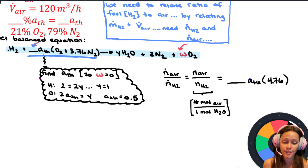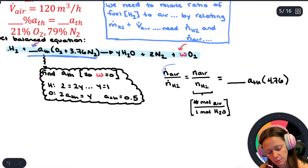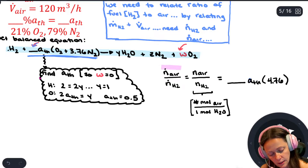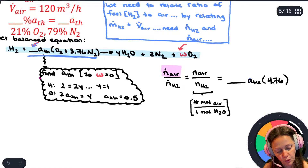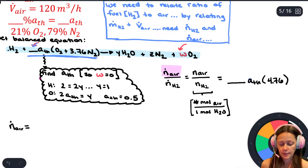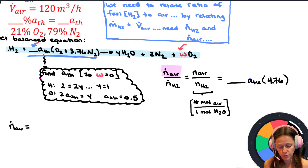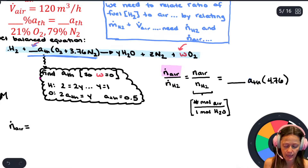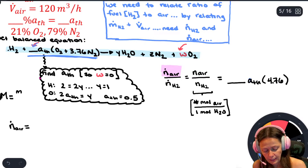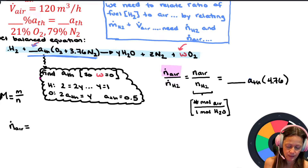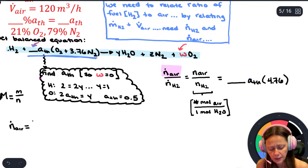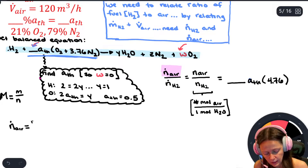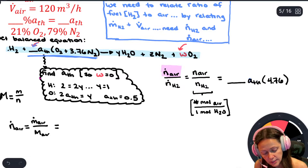That's the strategy. Now the molar flow rate of the air - what I have is the volumetric flow rate of the air, and I'd like to relate that to the mass flow rate. The molar mass is the key to go between things in terms of moles and mass. Molar mass is mass over moles, so I can relate this to the mass flow rate of the air.